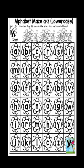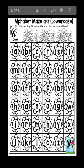Now let's see the next activity: Alphabet Maze, A to Z in lowercase. There is a starting point and an ending point. You have to match through the maze according to the letters in order. The first letter is A - what comes after A? B. Then C, then D.